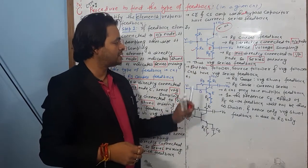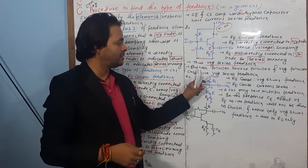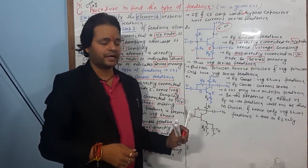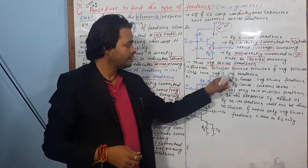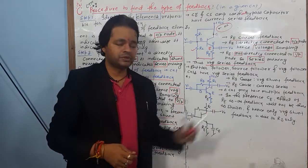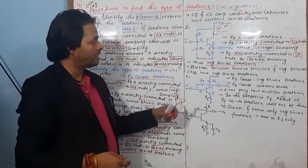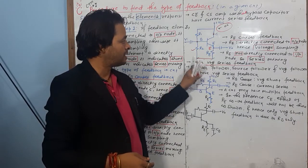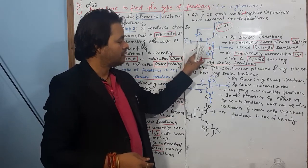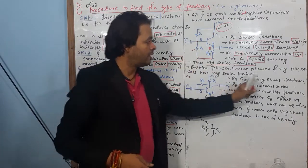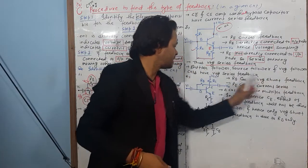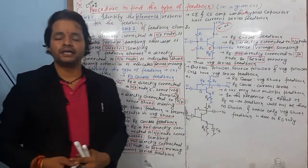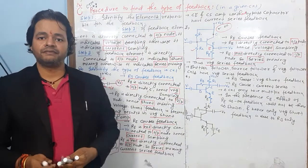In BJT, the emitter follower, and in FET, the source follower — circuits that follow the input voltage, i.e., voltage follower circuits — have voltage series feedback. This is very important.